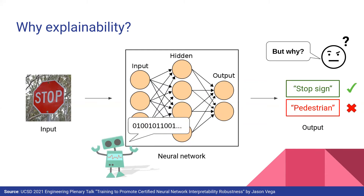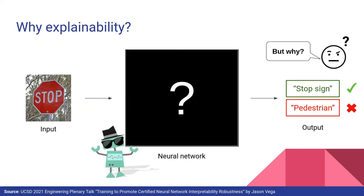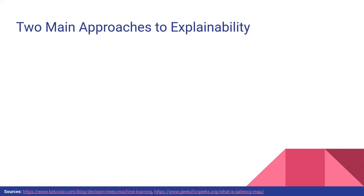We can't just ask the neural network 'why did you do that?' — at least not yet. Neural networks speak a language very different from what humans are used to, so from our perspective it can be a bit of a black box. This raises trustworthiness and transparency concerns, especially if you're being driven in an autonomous vehicle and the system can't easily explain its driving decisions. We would like assurance that these models are doing the right thing — that's where explainability comes in.